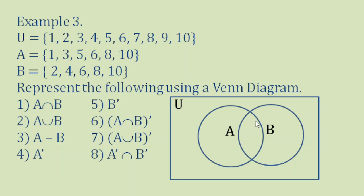For set A, we already have 6, 8, 10 in the intersection, so we add 1, 3, 5 inside set A only. For set B, we already have 6, 8, 10, so we add 2 and 4 inside set B only. All remaining elements — 7 and 9 — are placed outside set A and set B but still inside set U.